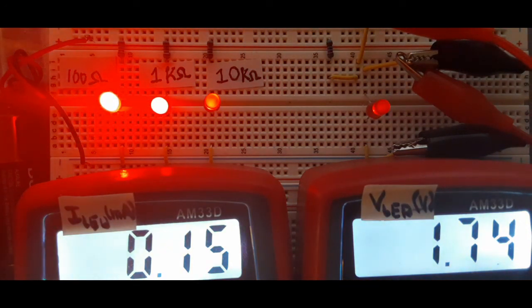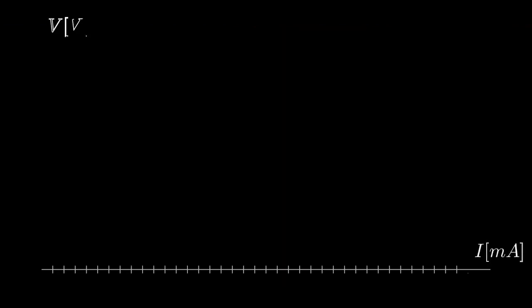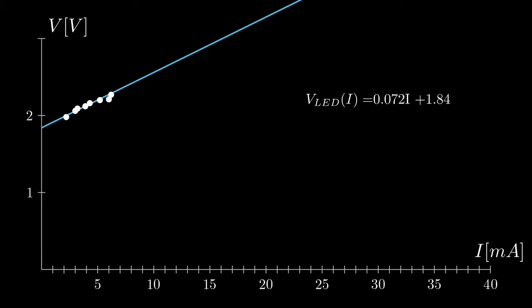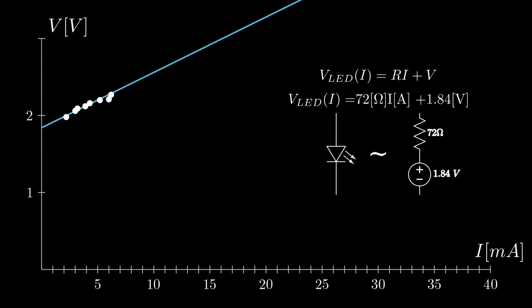So to account for this we can make a slightly better model. On a VI characteristic plot we get that a constant voltage sync looks like this and plotting a couple data points from our test setup we see that the LED is not constant. Applying linear regression we get that the voltage across the LED with respect to current is equal to 0.072 times I plus 1.84. To give a little bit more perspective, the voltage across the LED is equal to some resistance RI plus a voltage. You can see that we have an Ohm's law here. Now adding units to this we get that there's 0.072 kilo ohms as part of our LED or 72 ohms with a 1.84 constant voltage sync.